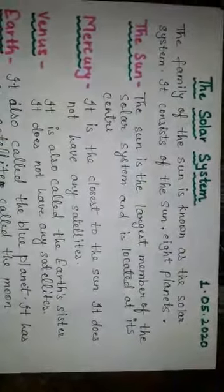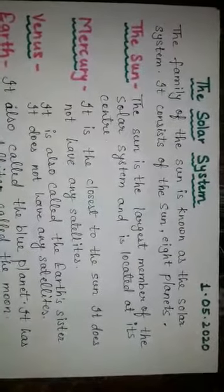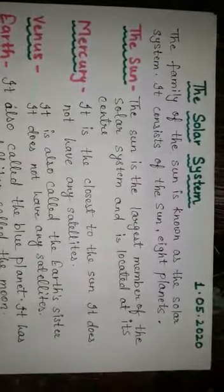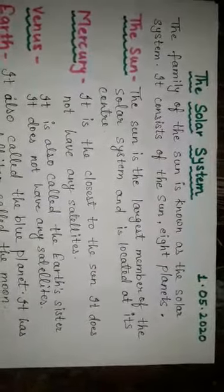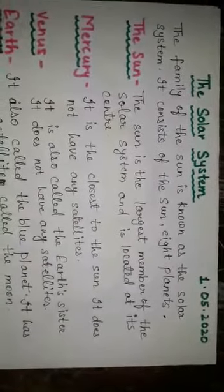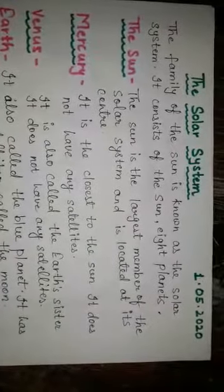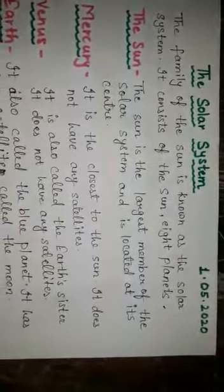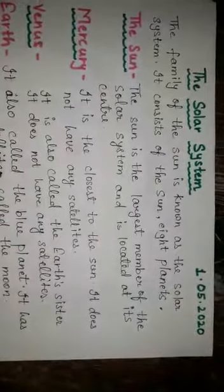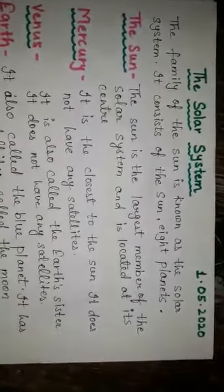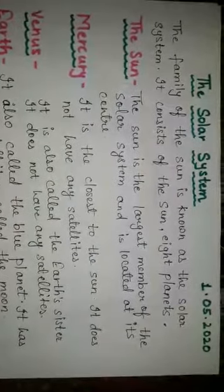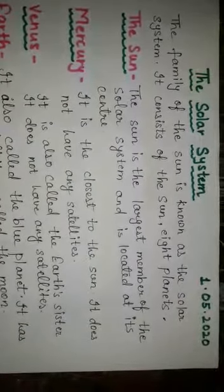In this chapter we will discuss the solar system. The family of the sun is known as the solar system. It consists of the sun, 8 planets, about 100 known satellites like the moon, asteroids, meteors and comets. The solar system is a part of the Milky Way galaxy.